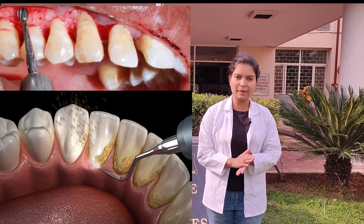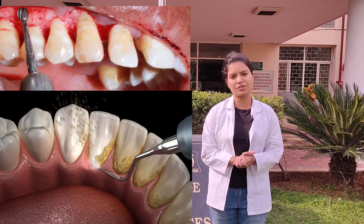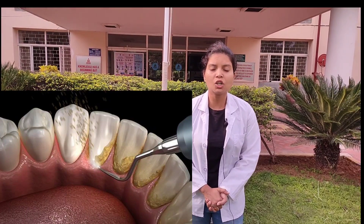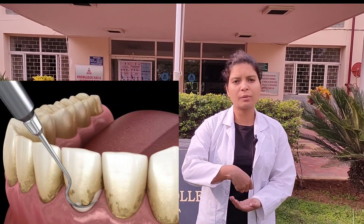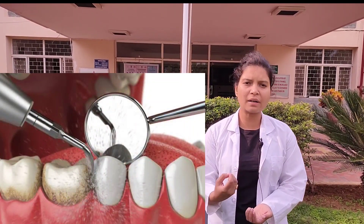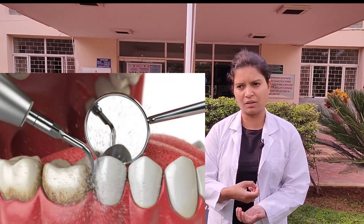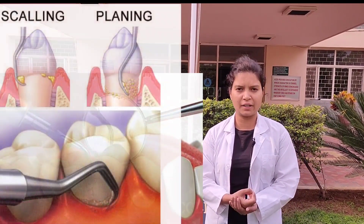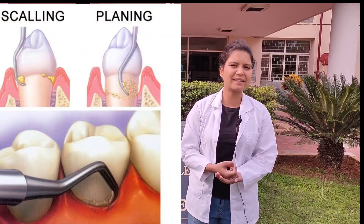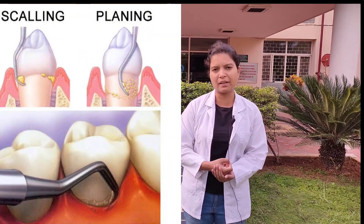Treatment of periodontitis is divided into two broad categories: surgical treatment and non-surgical treatment. Non-surgical periodontal therapy removes the deposits present on the surface and beneath the gum using hand instruments or ultrasonic scalers. This procedure is called scaling and root planing.